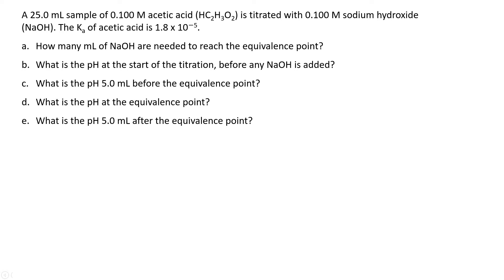Let's see what this titration looks like. We have a 25 milliliter sample of 0.1 molar acetic acid and we're going to titrate it with 0.1 molar sodium hydroxide. We are given that the Ka of acetic acid is 1.8 times 10 to the negative fifth.